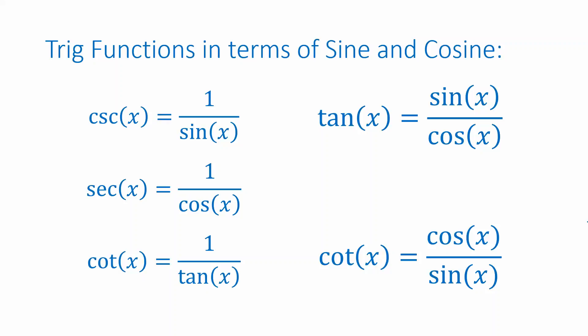For example, cosecant is just the reciprocal of sine, secant is the reciprocal of cosine, tangent is sine over cosine, and cotangent is either the reciprocal of tangent, or if you take the definition of tangent as sine over cosine and take its reciprocal, you can write cotangent as cosine over sine. Usually either of those approaches will get you closer to what you want.